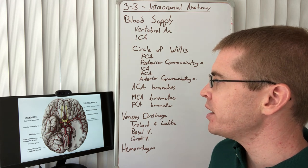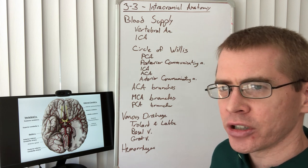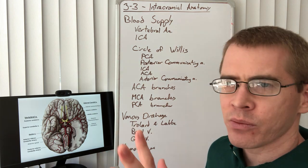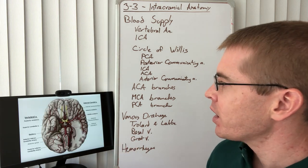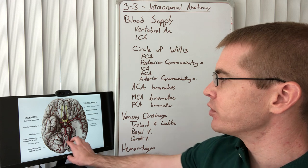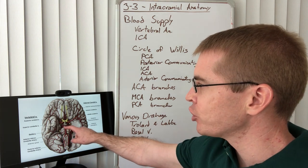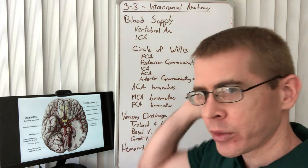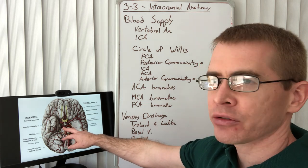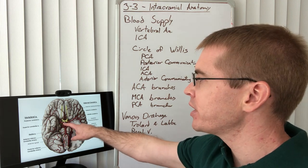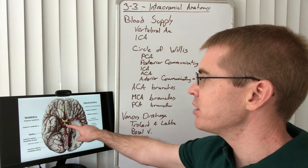Here we can see the major branches of both of these arteries. The vertebral arteries join together to form the basilar artery, and its terminal branch is the posterior cerebral artery, which supplies the back of the brain. The posterior cerebral artery communicates with the internal carotid artery via the posterior communicating artery.